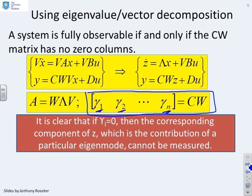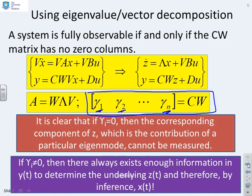So in other words, that mode is unobservable. If gamma i is not equal to zero, then there always exists enough information in the output measurement y of t to determine the underlying z of t. And therefore, by inference, we can also find x of t. So we are observable.